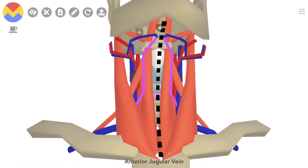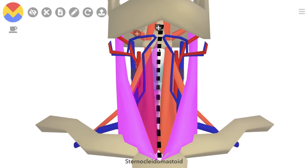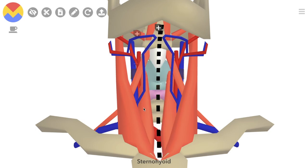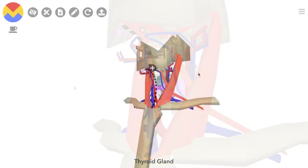The last triangle is the muscular triangle. It's bound by the midline, the omohyoid, and sternocleidomastoid. Again, that's the midline of the neck, superior belly of the omohyoid, and sternocleidomastoid. It contains the sternohyoid and sternothyroid muscles, as well as thyroid and parathyroid glands. That's it for the anterior triangle.